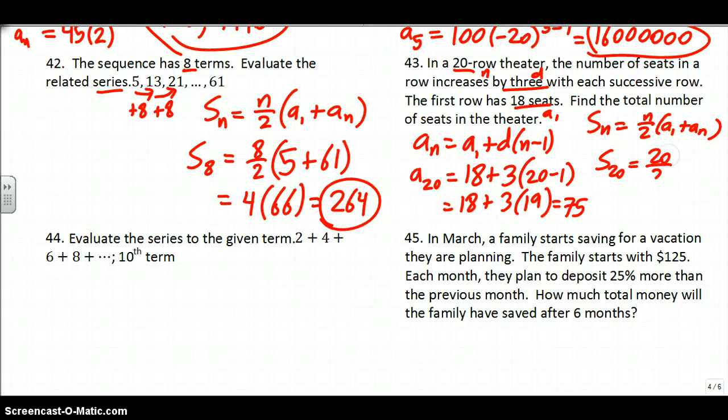Let's find the sum. First row has 18, 75 in the 20th row. So it will be 10 times 93, which is 930 seats. That's probably the trickiest part of the arithmetic series problems - you sometimes have to find that last term.